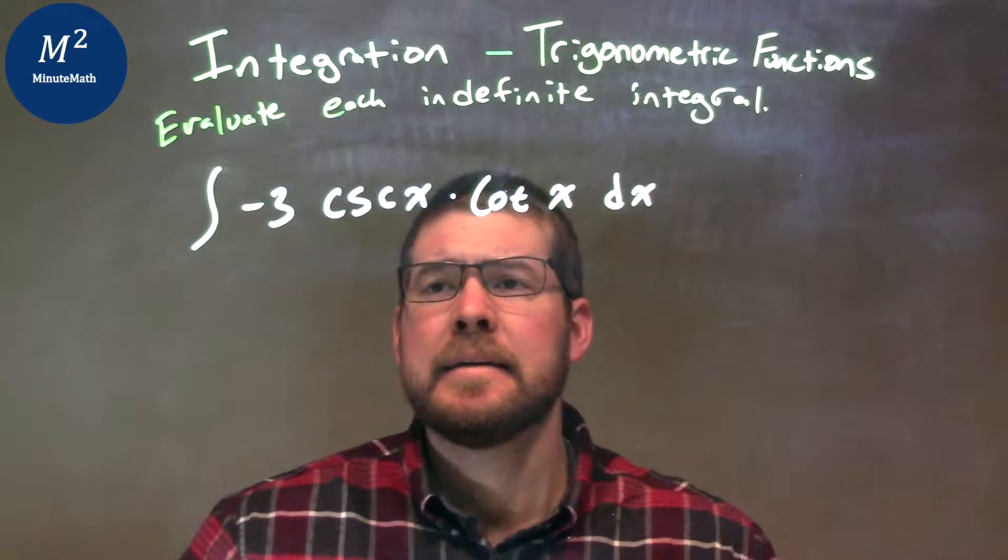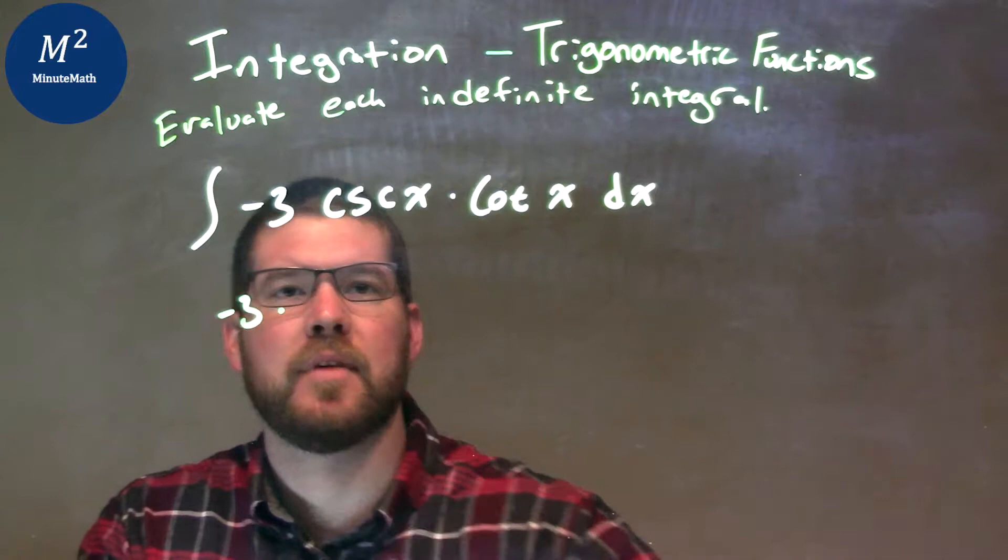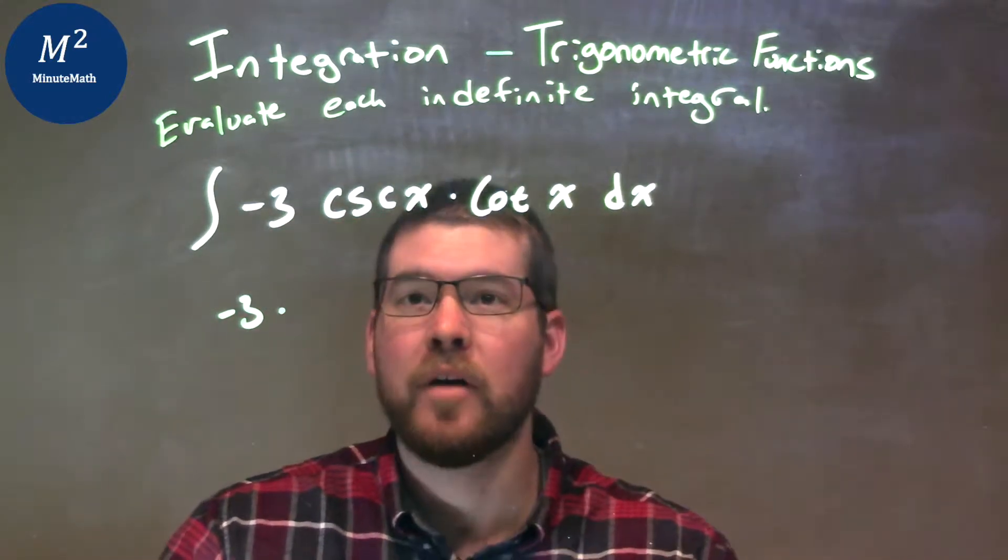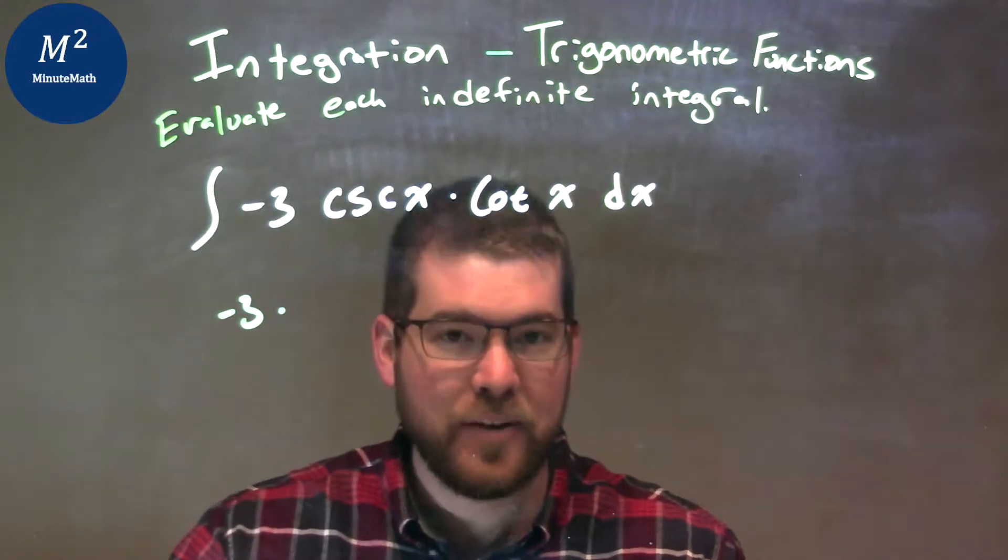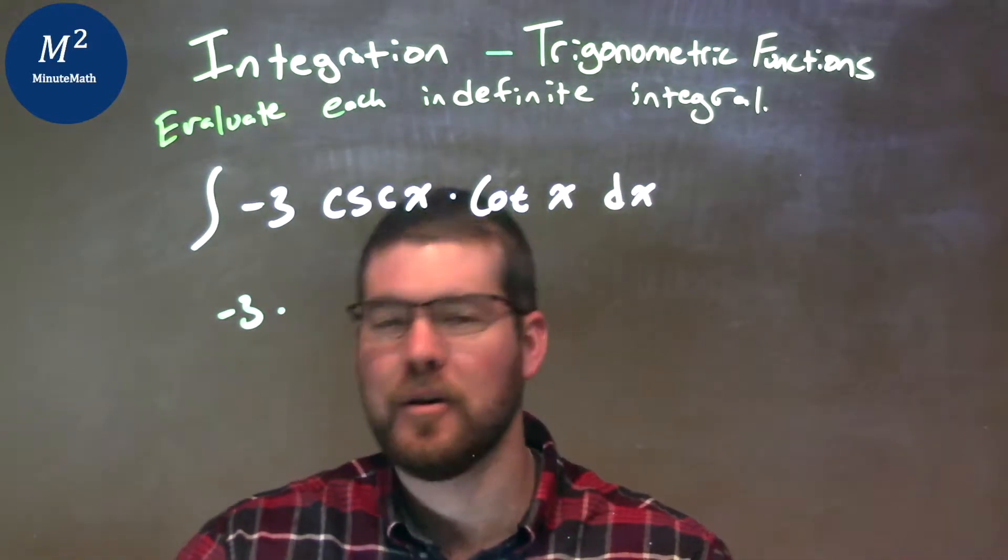Now, the first thing I like to do is think of my constant kind of separate, so the negative 3 out front. Now, the integral of cosecant x cotangent of x, if you know your integration rules, your trig identities,